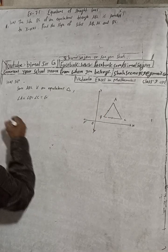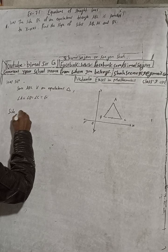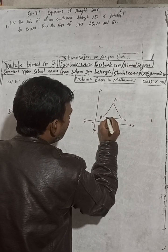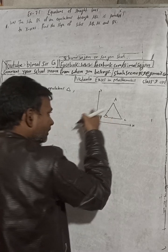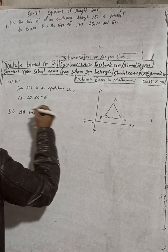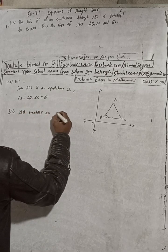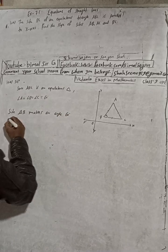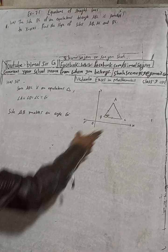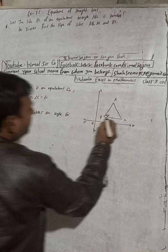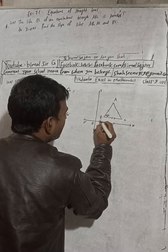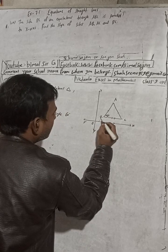For side AB: side AB makes 60 degrees with this direction. Since BC is parallel to the x-axis, if I extend line AB, this angle will also be 60 degrees, because of the parallel line property.